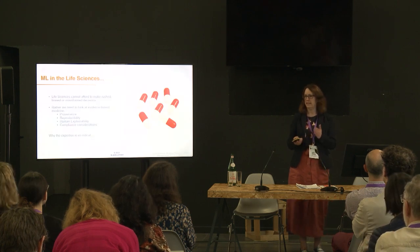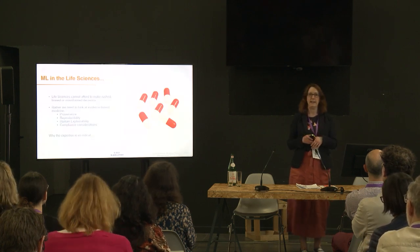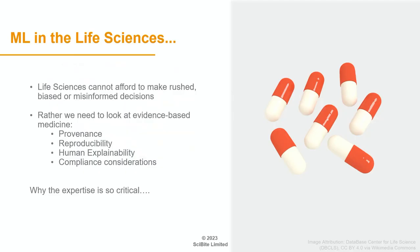In life sciences, probably more so than in any other domain, everyone would agree that we can't make rushed, misinformed decisions that could have dire consequences — especially for things like medicine, where you've got patients at the heart of it. So rather, we need to look at the best evidence available and what inferences we're making from that. It's come up a lot in this conference already: it's not just the answer that you get, you need to look at the evidence for that answer.